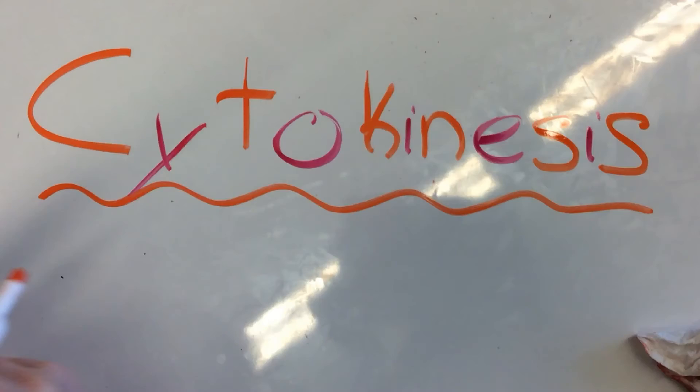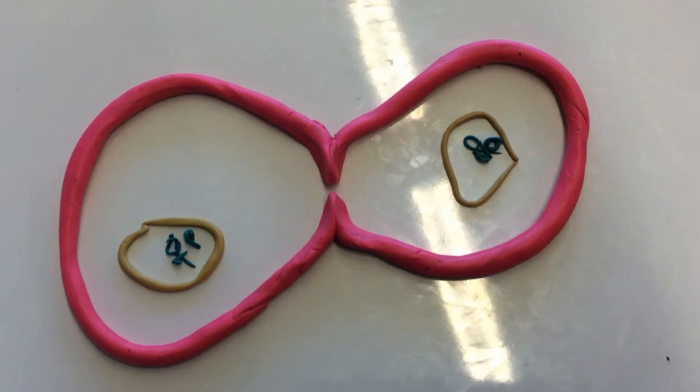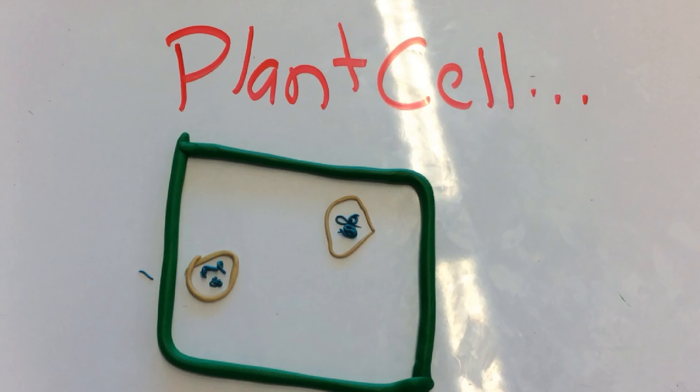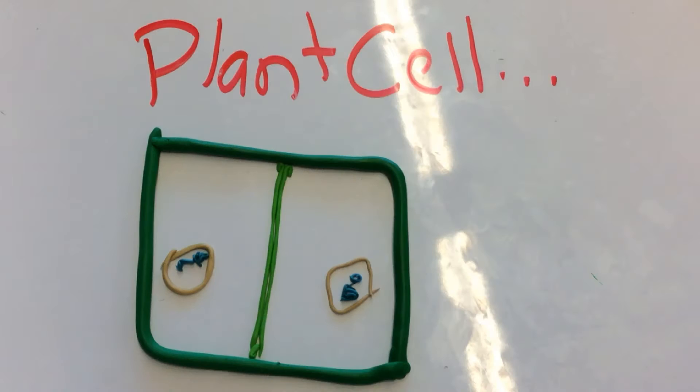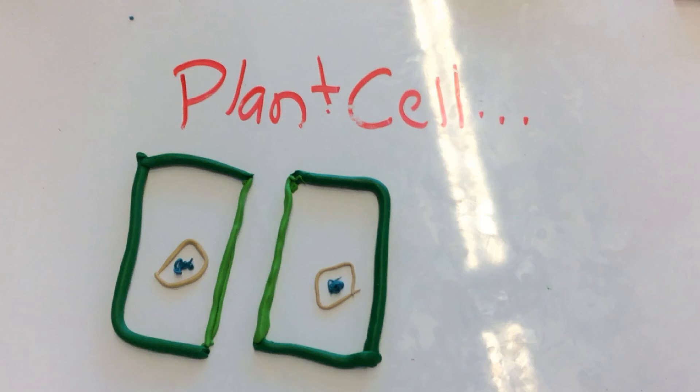Cytokinesis happens in both plant and animal cells. In animal cells, the cell membrane is pinched into two daughter cells. In plant cells, vesicles are placed down and connected to form cellulose, making a new cell wall.